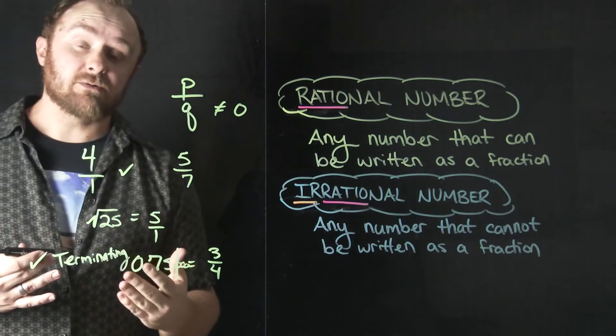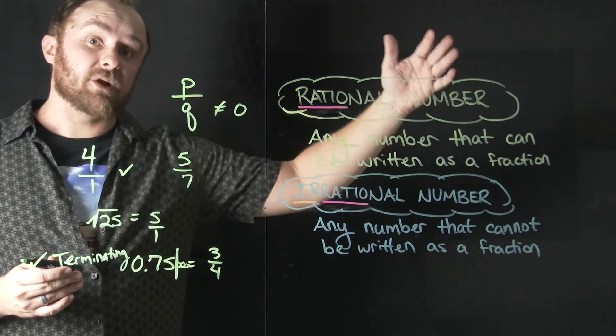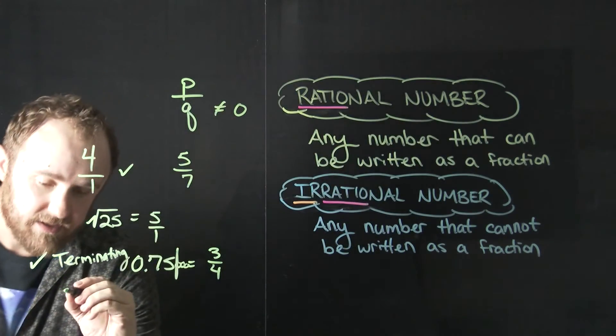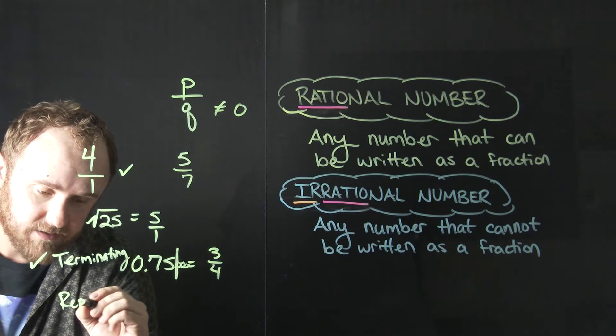But also some decimals that don't terminate, some decimals that go on forever and ever and ever, not in zeros but in other digits, those are also rational. And those are decimals that have repeating patterns.